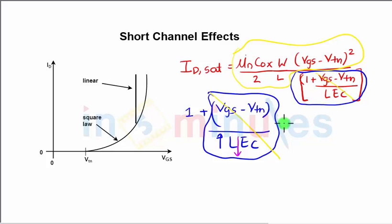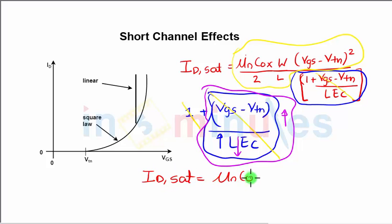This entire circled term is going to be a higher value compared to 1, so in this case 1 can be easily ignored. Let's rewrite the equation if 1 is ignored. So I_D,sat = (μn Cox / 2) × (W / L) × (Vgs - Vtn)^2...